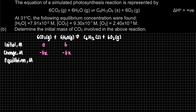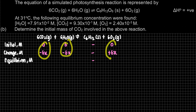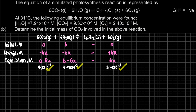Adding initial and change gives the equilibrium row. The positive or negative sign does not mean the concentration itself is negative — it means decrease or increase. For CO₂ at equilibrium: A − 6X = 9.3×10⁻¹. We have two unknowns, A and X, so we first find X using the O₂ equilibrium: 6X = 2.4×10⁻³.